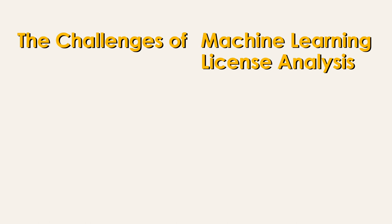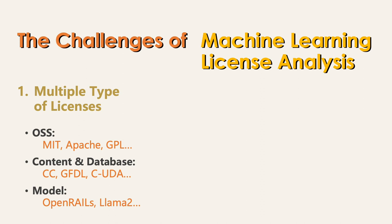Currently, there are three main challenges in machine learning license analysis. First, machine learning projects may involve multiple types of licenses. For instance, the modeling code may be licensed under software licenses, while the training dataset may be governed under content or database licenses like Creative Commons. Particularly challenging are the newly introduced responsible AI licenses such as OpenRail and LLaMA 2, which are not supported by traditional license analysis applications. Addressing multiple licensing frameworks in a single application poses a significant challenge.